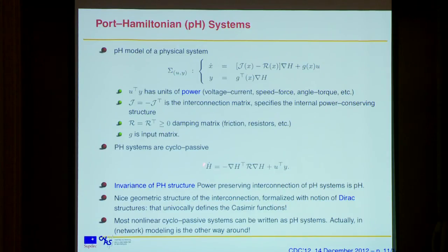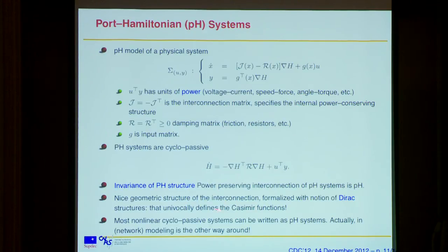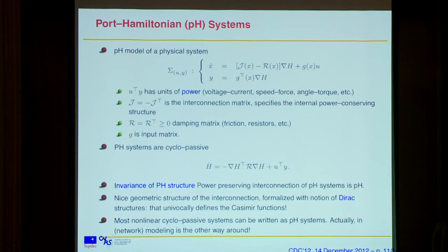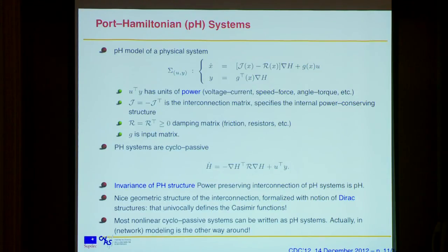One important property of Port Hamiltonian systems is that the structure is invariant under power-preserving interconnection. If you take two Port Hamiltonian systems and interconnect them through power-preserving interconnection, the overall system is still Port Hamiltonian. The Casimir functions are univocally determined by the interconnection. What's important for your control design to be successful is having the right interconnection — that's why you allow yourself the possibility of changing it. The original system has some interconnection structure, but with your sigma_i block you change the interconnection to generate Casimir functions. This technique is called interconnection and damping assignment: you change the interconnection and the damping to achieve energy shaping.